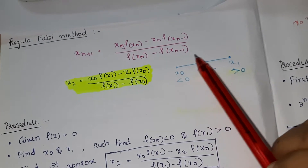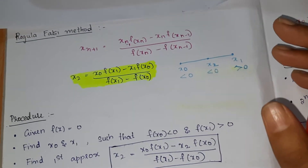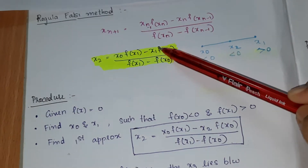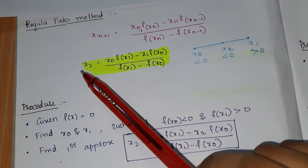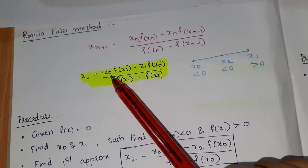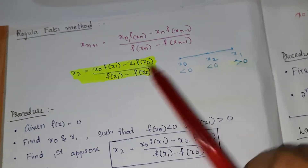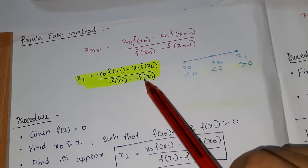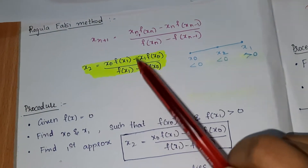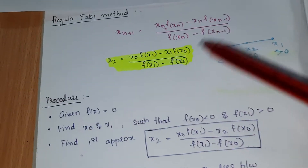Let's substitute simple numbers to make it easier. If you need to find x2, you need x0 and x1. So it's x0·f(x1) minus x1·f(x0), divided by f(x1) minus f(x0). It's easy compared to the general form — if you need x2 you need x0 and x1, that's all.